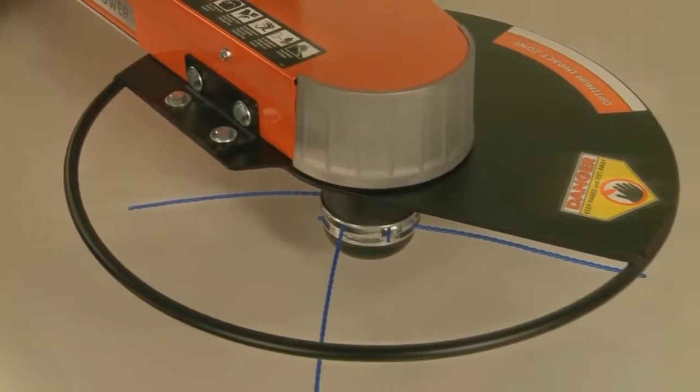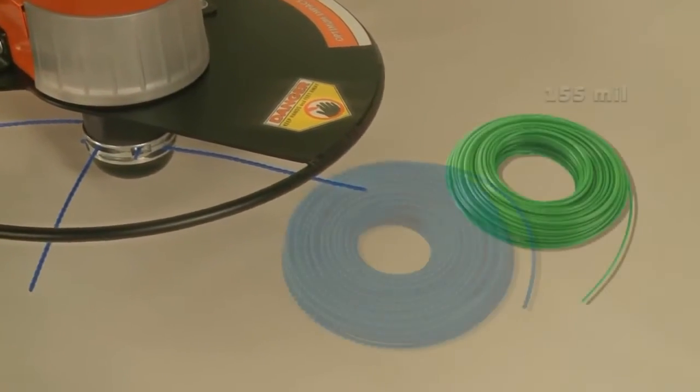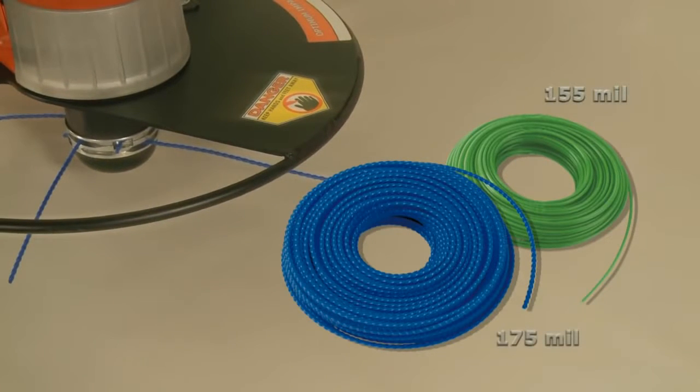When ordering pre-cut cord, be sure to specify QuickLock 13 inch cord or save money by ordering cord by the roll and cutting it yourself.